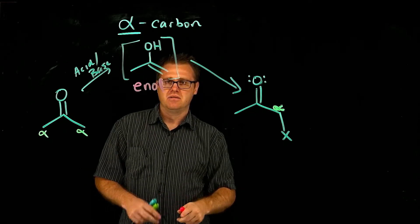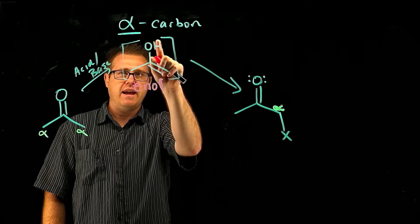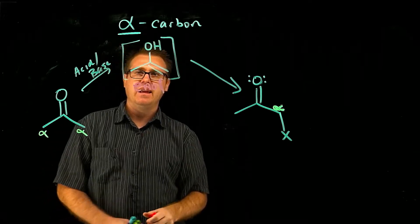Why is it called an enol? E-N for alkene, O-L for the alcohol. That is an enol.